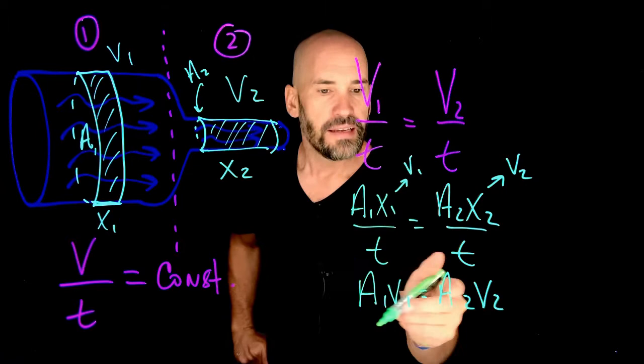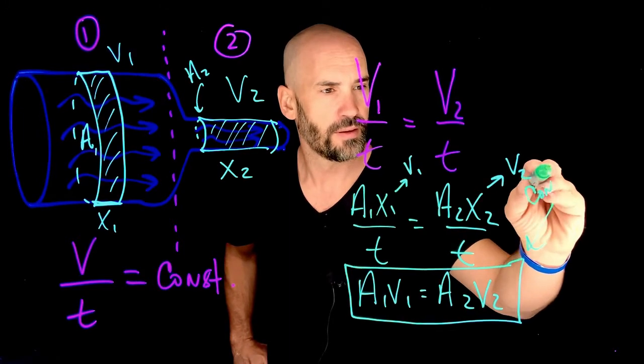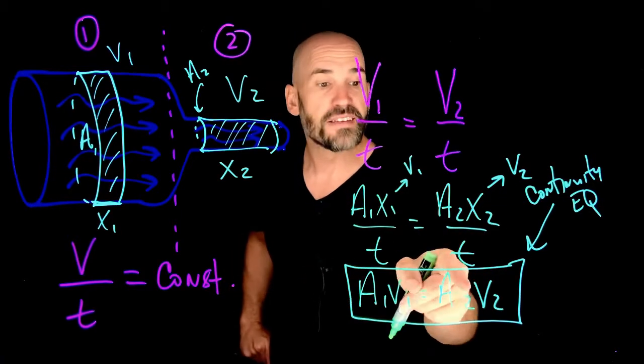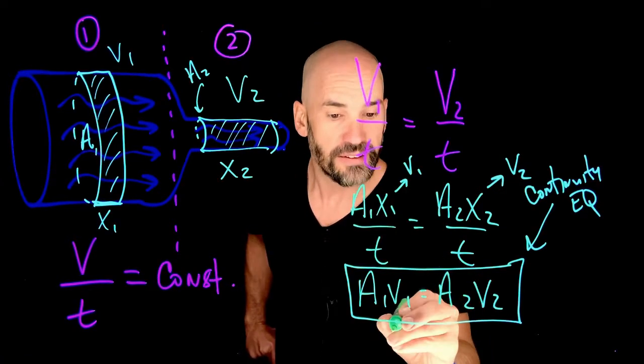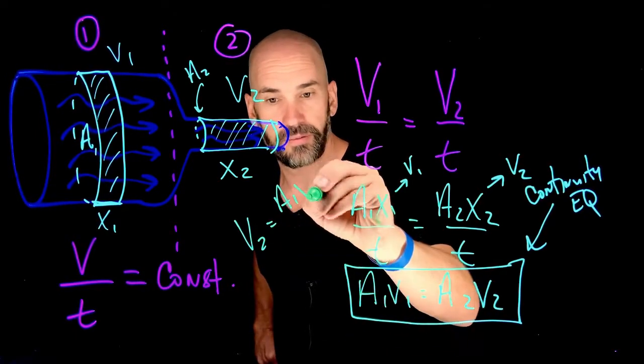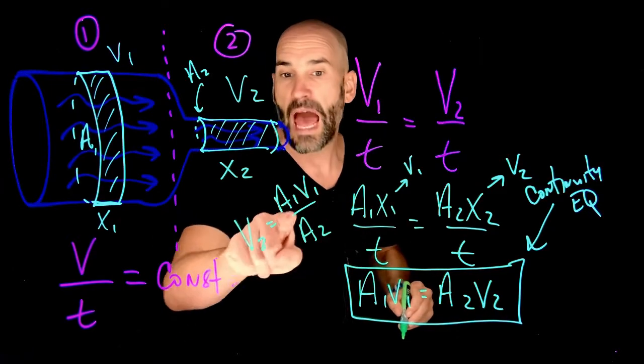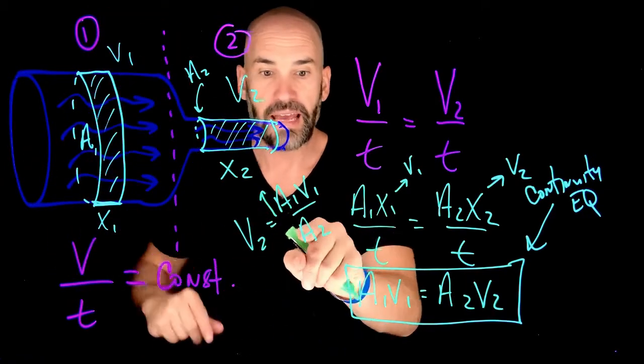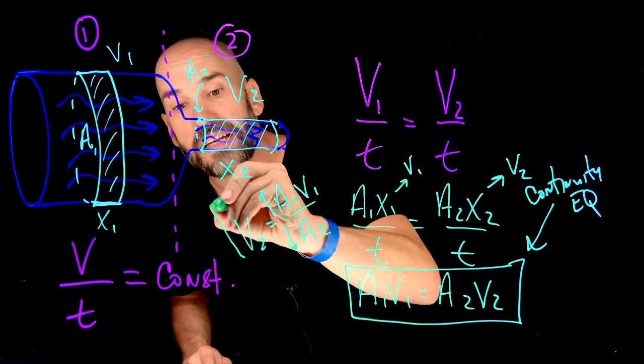But what does that mean? That means that if I were to take this little relationship, which by the way is called the continuity equation, if I were to take this relationship and solve for the velocity on the two side, so I'm solving for v2, that's going to wind up being that v2 equals a1 v1 over a2. So here's the thing. What happens if I increase a1, a1 gets big, and a2 becomes small? What happens to the second velocity? That must increase.